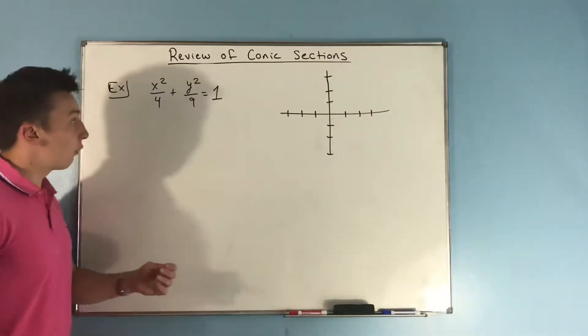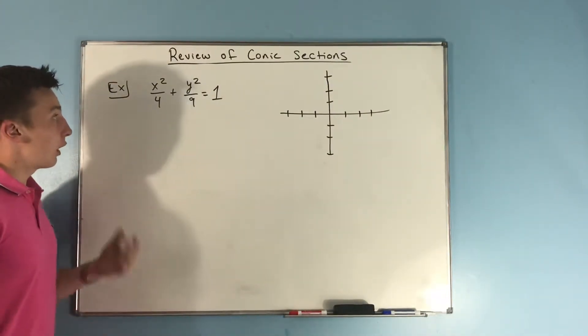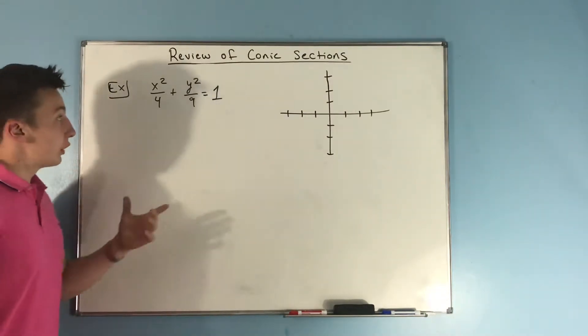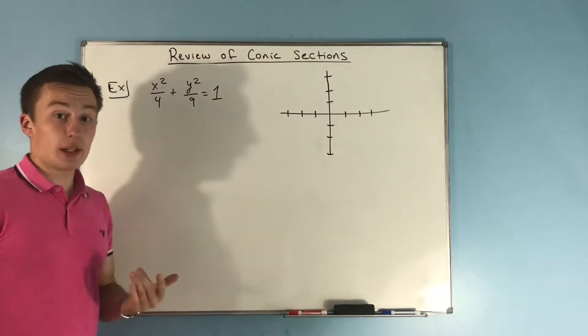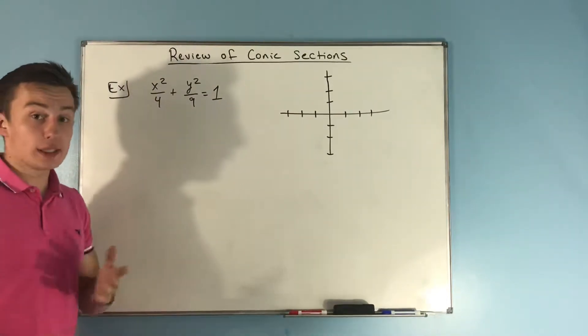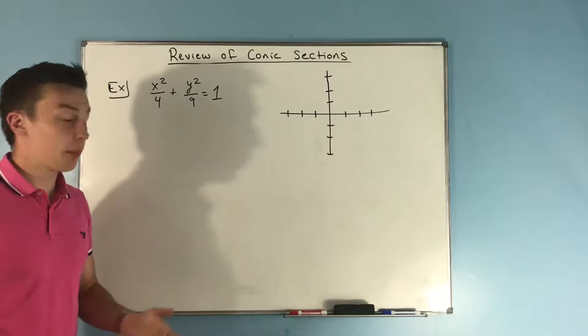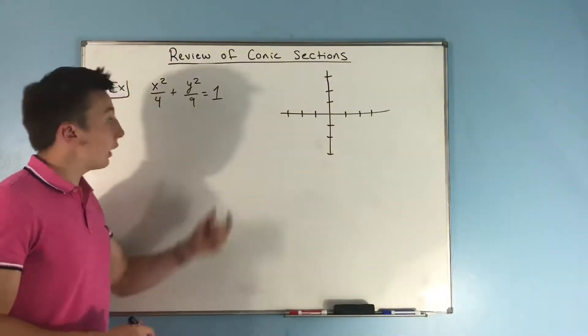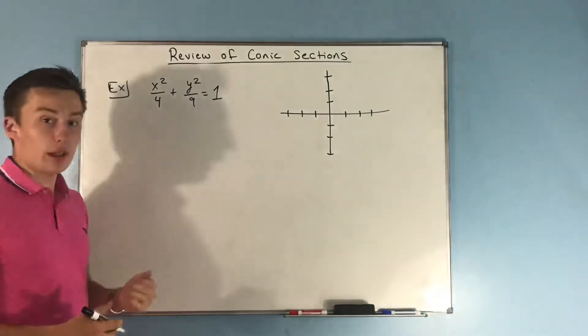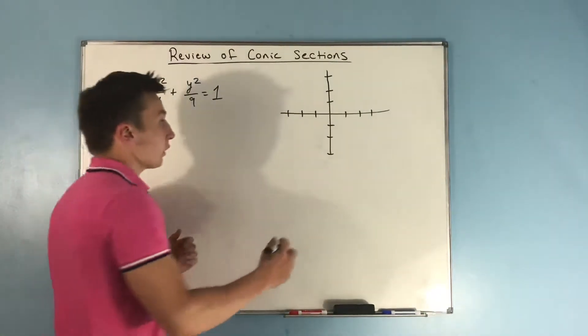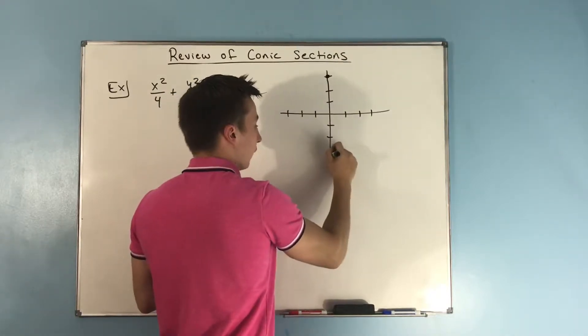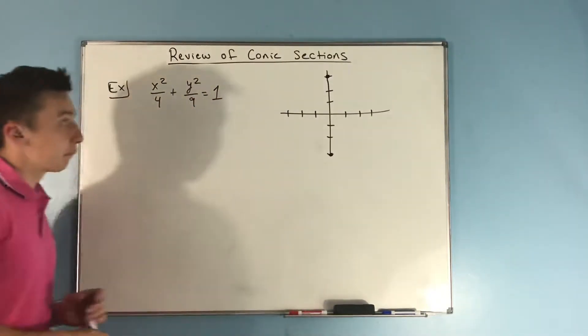So we have our first quick example here, x squared over 4 plus y squared over 9 equals 1. So we can tell that this is an ellipse, right? This is an ellipse, we have two positive terms. One is not negative, if so, this would be a hyperbola. Now what is that semi-major axis length going to be? Well, it's just the square root of whatever's here, which is 3. So we know that we're going to have points right here and points right here.